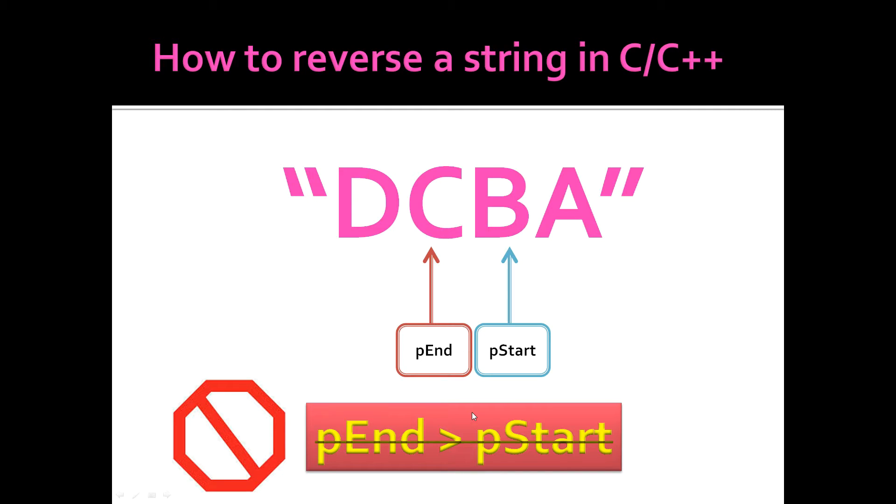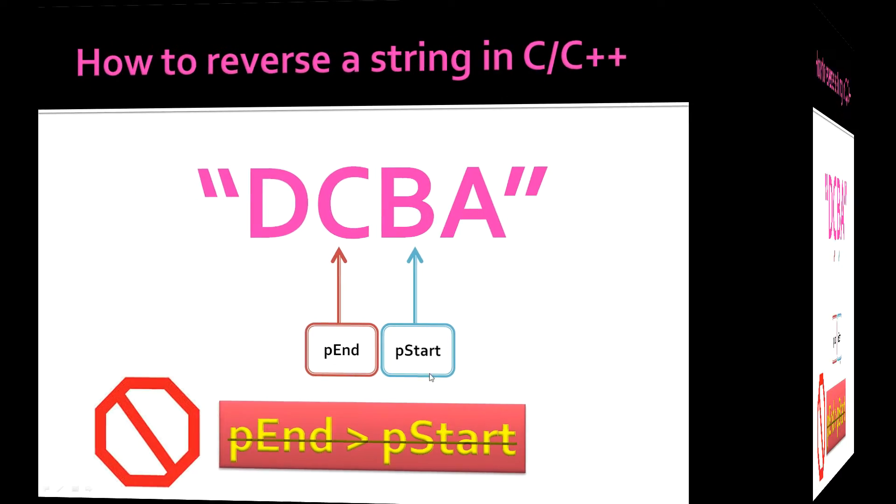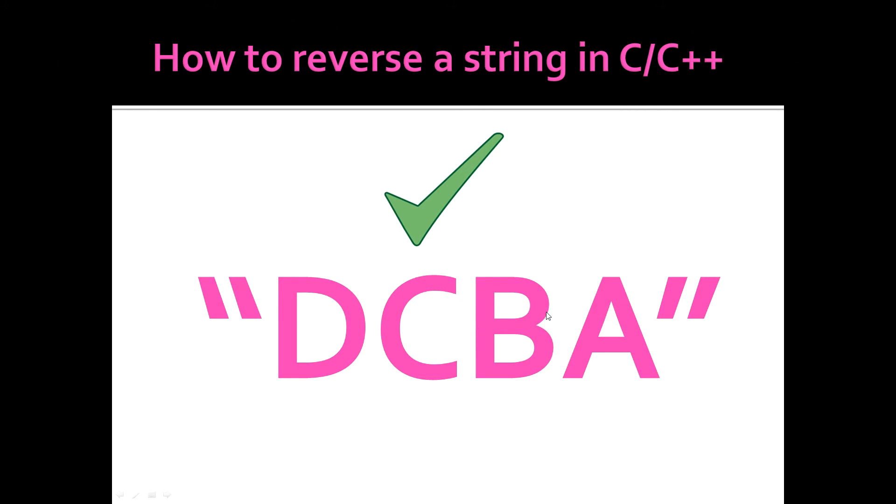This indicates to us that we no longer need to swap again. We're done. Hey, so that's success. That means we have swapped every character in the string and we're done with our code. So this is how we do it with two pointers and I hope the slides were clear. So now I'm going to translate this into code as a next step.